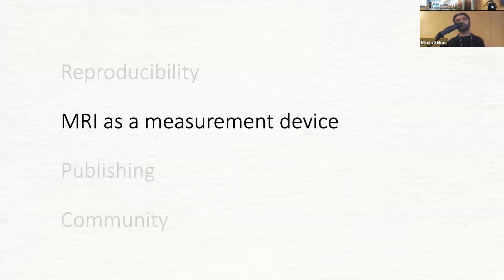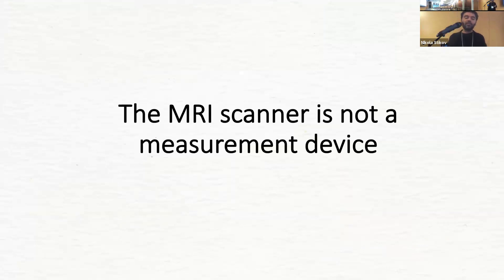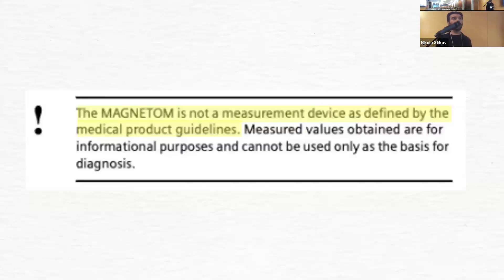Now we get to the problem of MRI as a measurement device. Every time you talk about MRI and numbers, it implies these numbers are something we can reproduce — like the temperature of the human body, where we have a thermometer and know what the right numbers should be to determine if we have a fever. Well, it turns out the MRI scanner is not a measurement device. The manufacturer says it bluntly: the Magnetom, that's a Siemens system, explicitly states it 'is not a measurement device as defined by the medical product guidelines. Measured values obtained are for informational purposes only.'